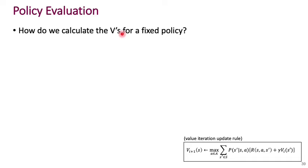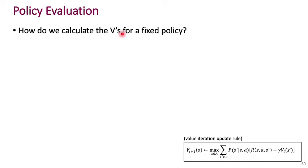We use the Bellman equation for an arbitrary policy as an update rule: start by setting values of all states to zero, then apply the update. The key difference from value iteration is that there is no maximization over actions — instead, you apply the action prescribed by the policy pi you're evaluating. So the reward term becomes R of s, pi(s), s prime.